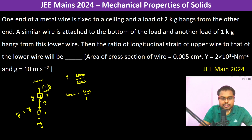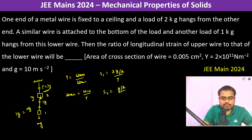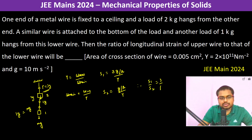Therefore, strain in the first wire is 3g divided by A, divided by Y. Strain in the second wire is g divided by A, divided by Y. Therefore, the ratio of longitudinal strain upper to lower, S1 by S2, is going to be 3 is to 1.